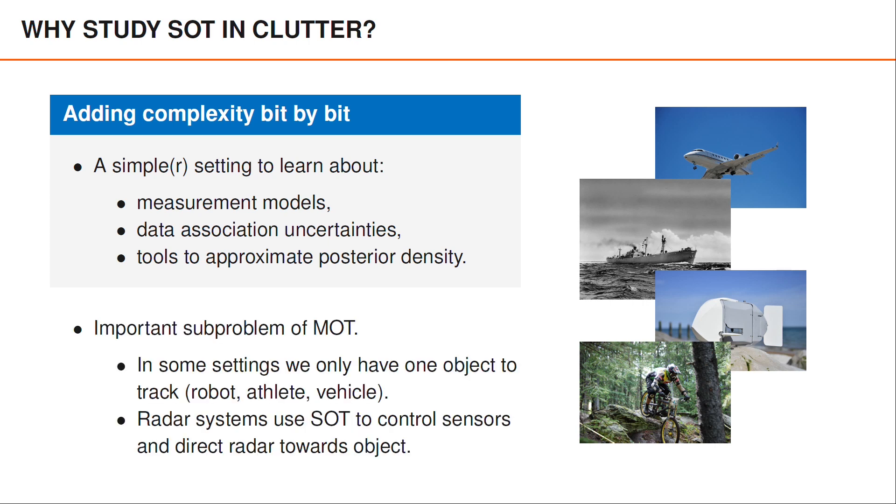A second reason is that single object tracking is sometimes an important problem in itself. For instance, there are many cases where we really only care about tracking a single object, such as a robot, an athlete, or a vehicle. Also, some multi-object tracking systems depend heavily on single object tracking algorithms. One example is radar systems for tracking airplanes or ships, where single object tracking algorithms are used to control the radar sensor and direct the radar beam towards individual objects, such as an airplane or a boat, to increase our chances of detecting them.